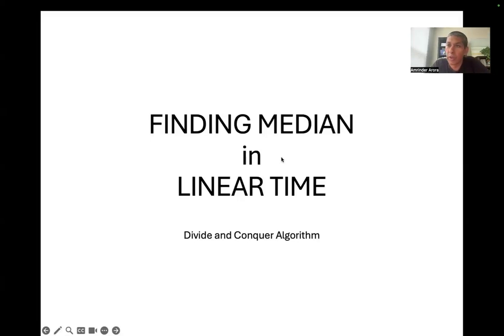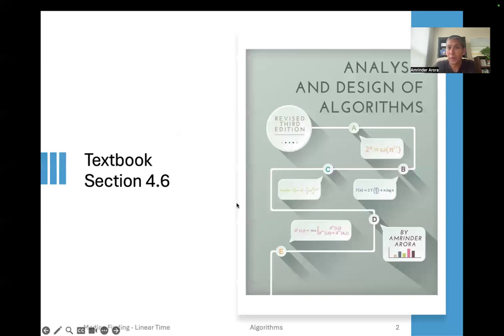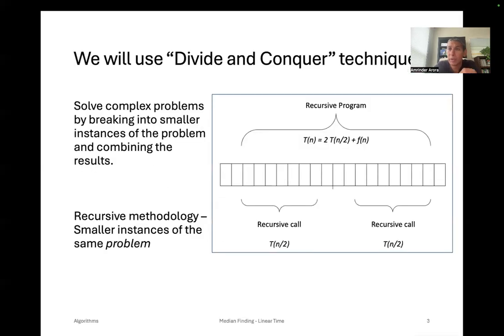Welcome everyone. Today we're going to be talking about finding median in linear time. It's a divide and conquer algorithm, covered in the textbook section 4.6. Divide and conquer is a design technique in which we solve complex problems by breaking them down into smaller instances of the same problem and combining the results.